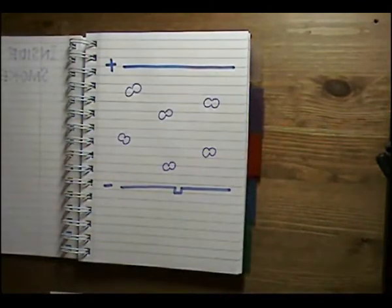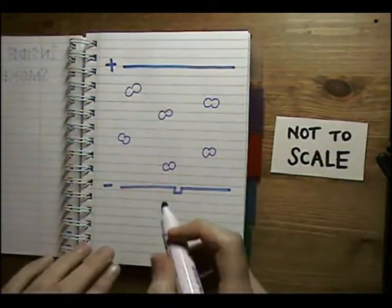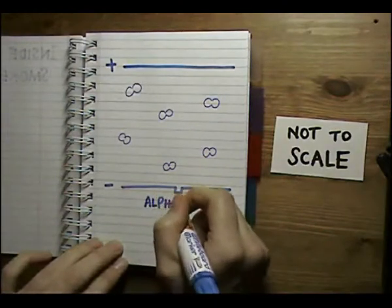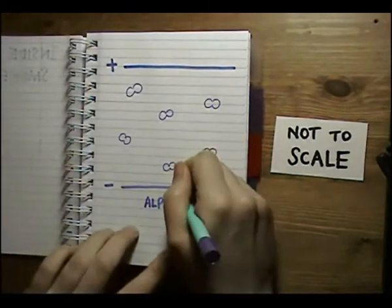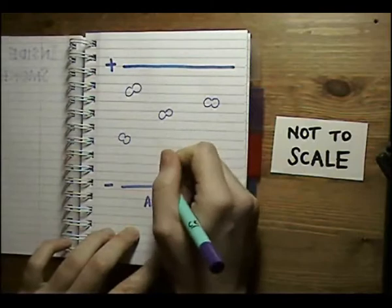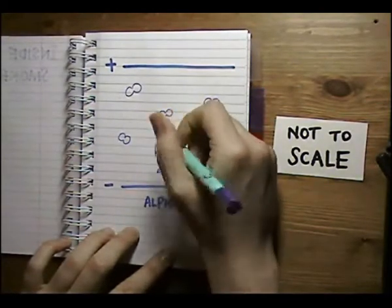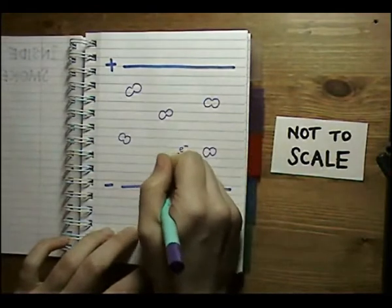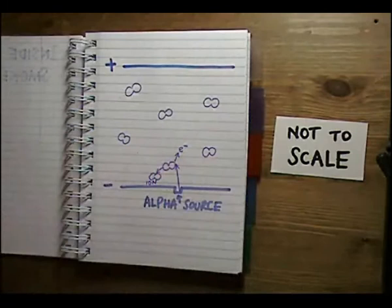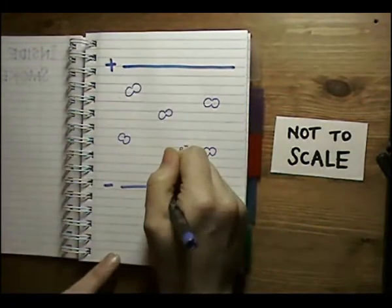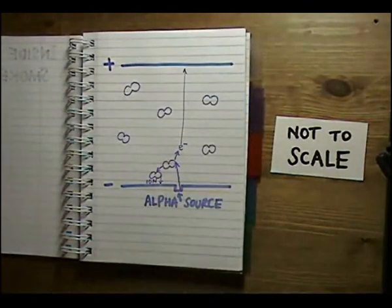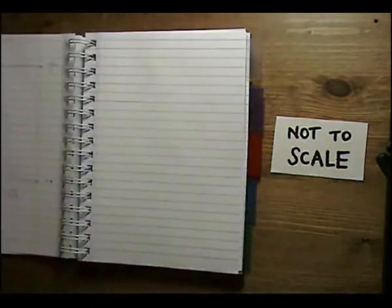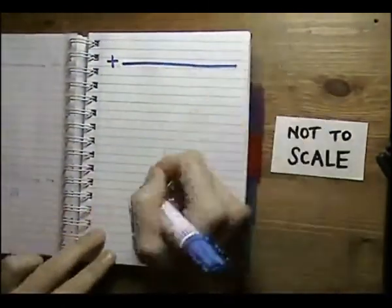Air is between these two plates. Normally, electricity can't flow through the air because it's not a conductor. This air is special because it's next to an alpha source — a tiny speck of the element americium-241. Many alpha particles will be released from the source, hit air molecules, and ionise them. The ionised air molecule is positive. The electron — the negative part — is attracted to the positive top plate because opposites attract, just like the north and south poles on a magnet. Together, the ions and electrons form a bridge between the plates that allows electricity to flow. So most of the time, an electric current is flowing through the circuit.